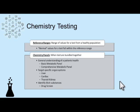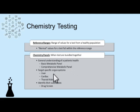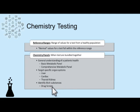A basic approach would be a basic metabolic panel. A comprehensive metabolic panel gives a more in-depth view of a patient's general health. There are other organ-specific panels such as liver panels, cardiac panels, or thyroid panels, as well as panels for many illicit substances, known as a drug screen.